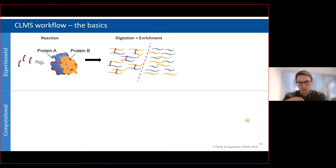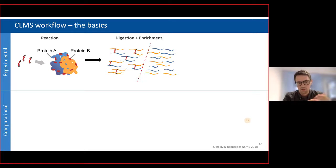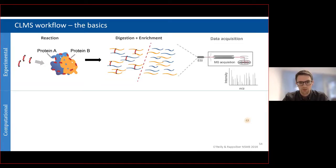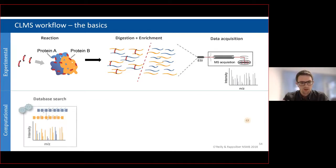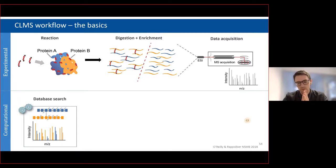In the standard workflow, you add your cross-linker to a purified complex, digest, and you're left with a mixture of cross-linked peptides and linear peptides. Cross-linking occurs substoichiometrically, so there's a huge abundance difference. You need enrichment — either by size since cross-linked peptides are larger, or by charge since they have two N-termini and tend to be more positively charged. You acquire in the mass spec, typically using Orbitraps for high resolution. You then need specialized search software to handle the chimeric spectra, followed by FDR filtering and visualization.